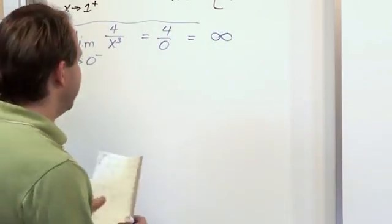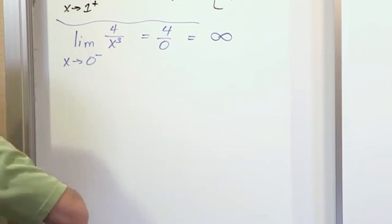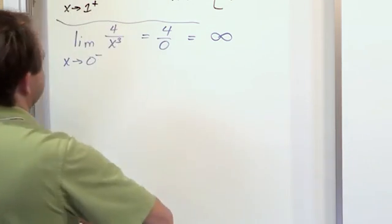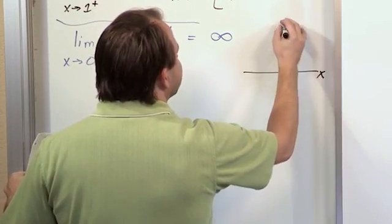Now, here's the kicker for this one, though. We're approaching this 0 from the left. So if you were to plot this guy, this is x and f of x.